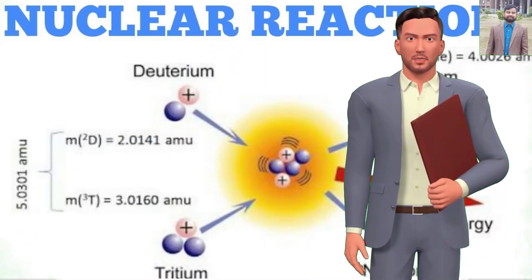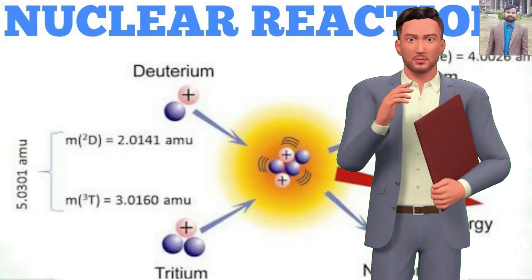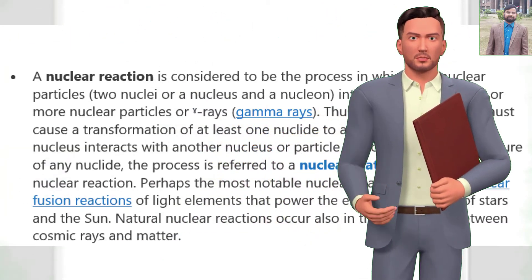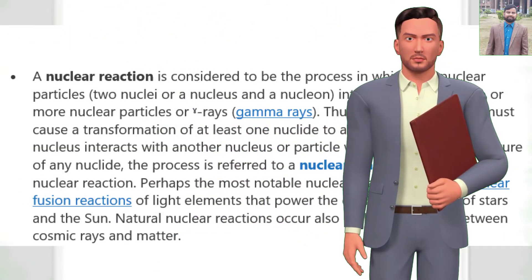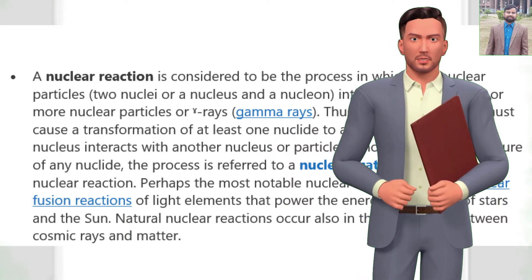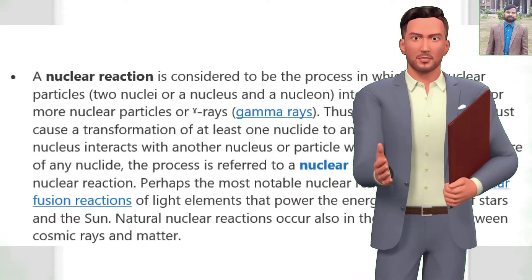A nuclear reaction is considered to be the process in which two nuclear particles, two nuclei or a nucleus and a nucleon, interact to produce two or more nuclear particles or rays, gamma rays.